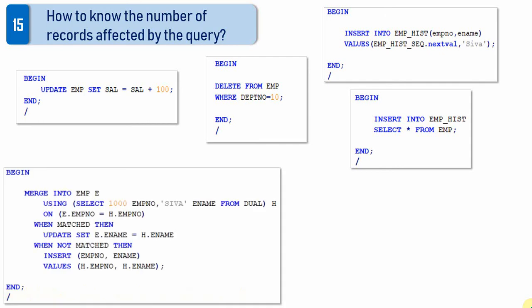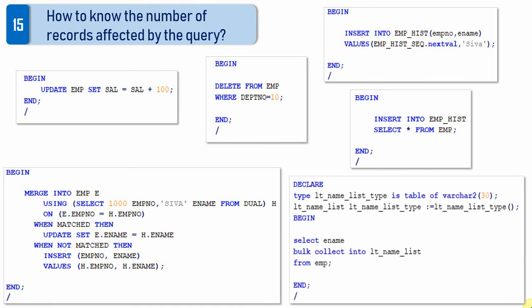The next example uses a merge statement to find how many records are affected by the merge. This will include both updated as well as inserted records. Finally, there is a block with a select statement, and we will see how to find the number of records fetched. I have taken these different blocks to show you two different ways by which you can find this information.